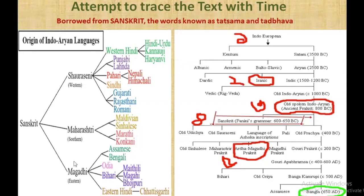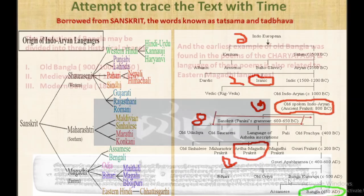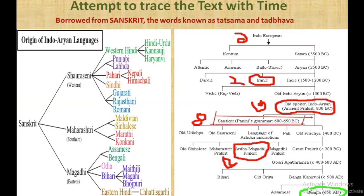Bengali came from the Magadhi, or you can call it the Ardha Magadhi. From the Magadhi came the Bengali language in 650 AD. So we can trace from the common ancestor all the way to the contemporary form of the Bengali language. It is assumed that what we're speaking today came around 650 AD.